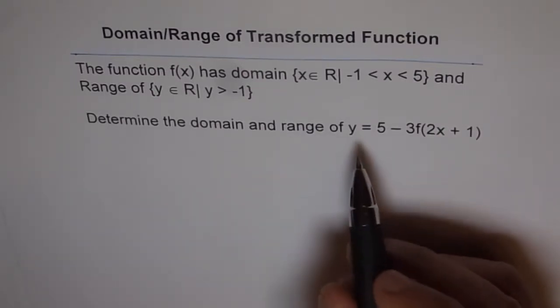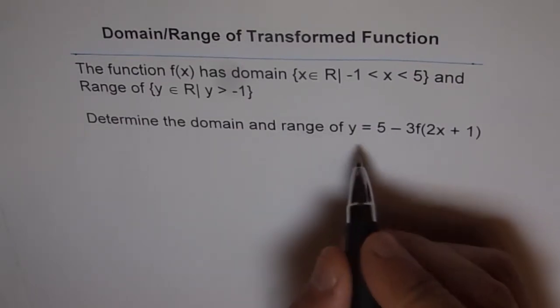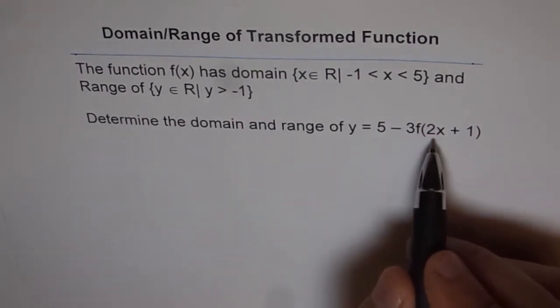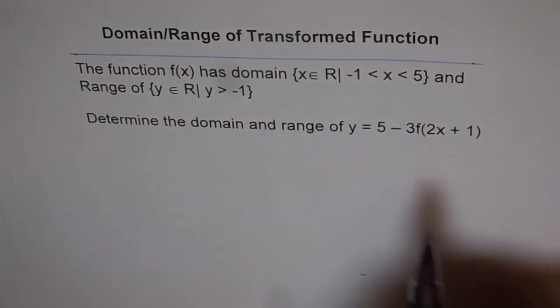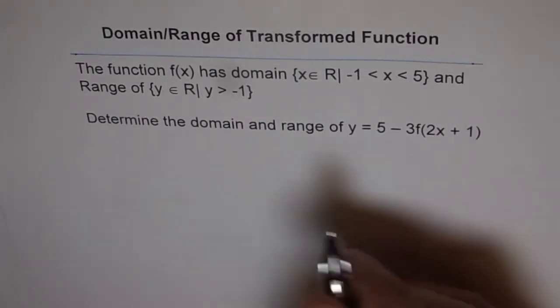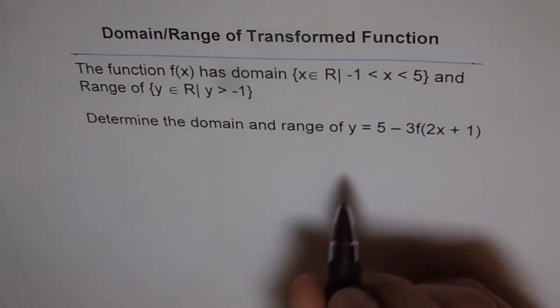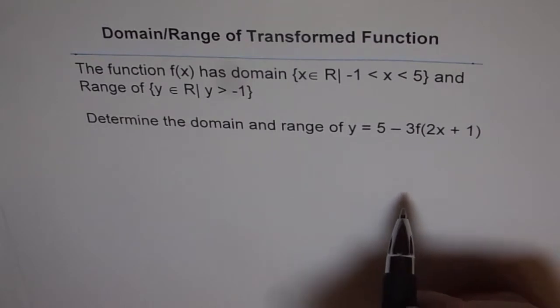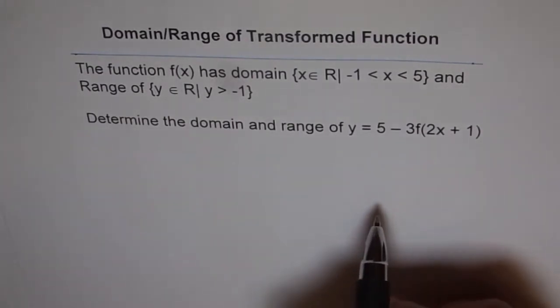We are trying to look into a transformed function which is y equals 5 minus 3 times f of 2x plus 1. Now what are the transformations taking place? To be absolutely clear about the transformation it is a good idea to write this in the standard way which you normally see.